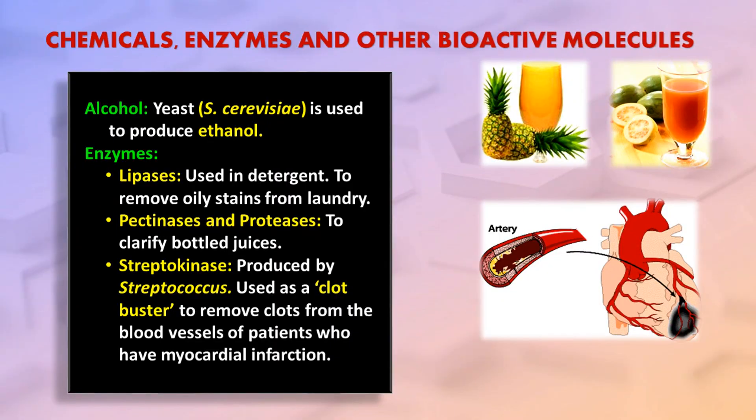Yeast is used to produce ethanol. The enzyme lipase is used in detergent to remove oily stains from laundry. Pectinases and proteases are used to clarify bottled juices. Streptokinase, produced by Streptococcus, is used as a clot buster to remove clots from the blood vessels of patients who have myocardial infarction.